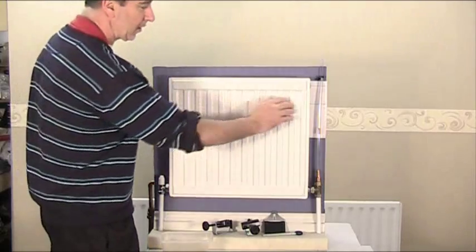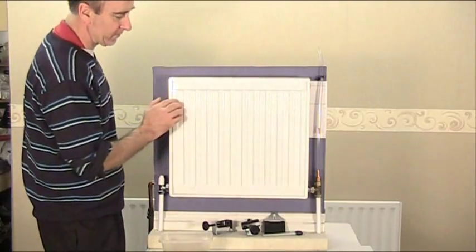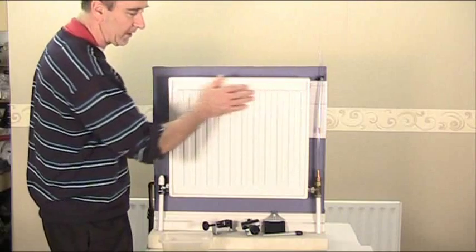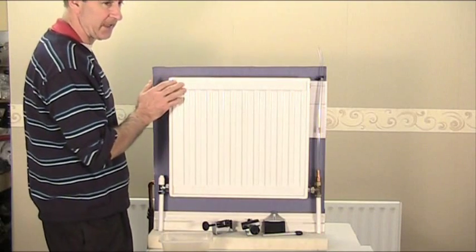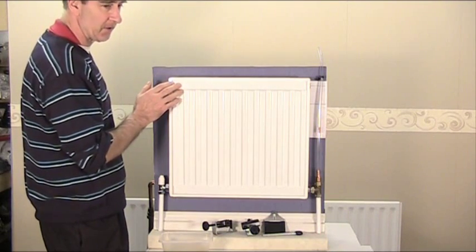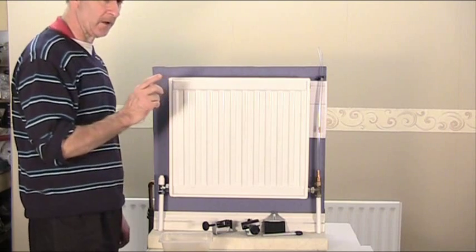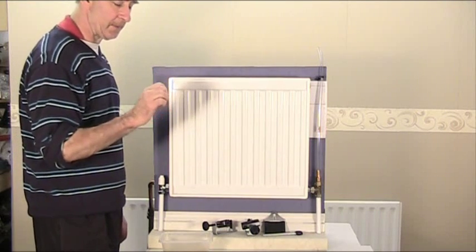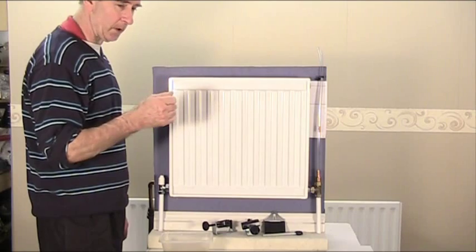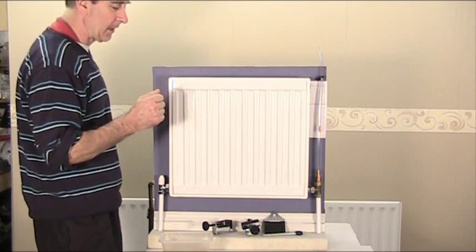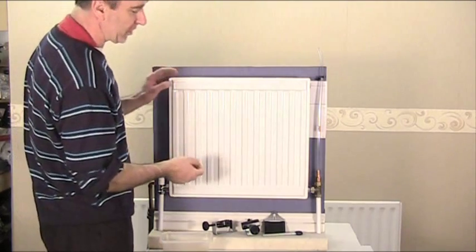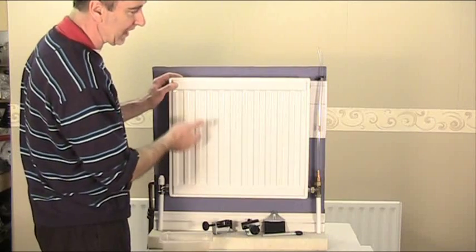Now if you are getting cold pockets or cold spots above the top of your radiator, it is 99% going to be air trapped, so you need to release that. But bear in mind on the pressurized system, you need to maintain the pressure manually underneath the boiler as you're doing it. Anyway, this is just a quick demonstration to show you what is actually happening in the radiator.